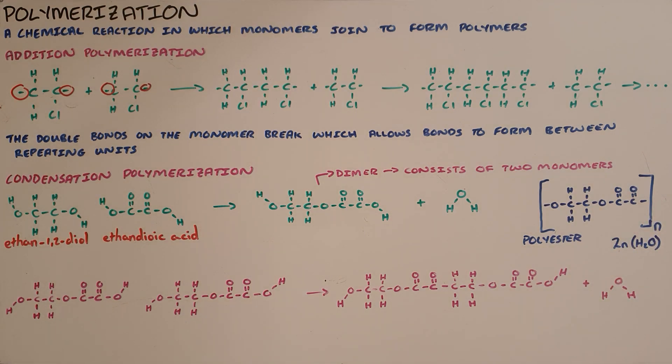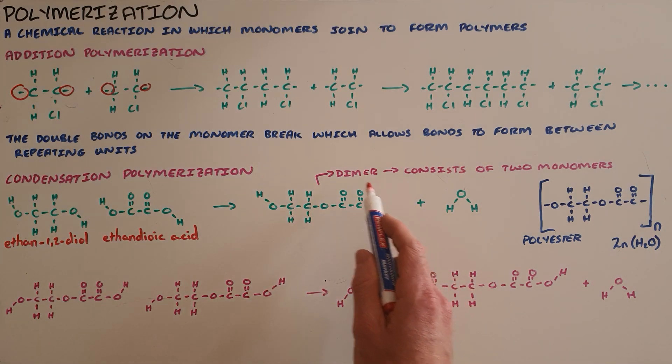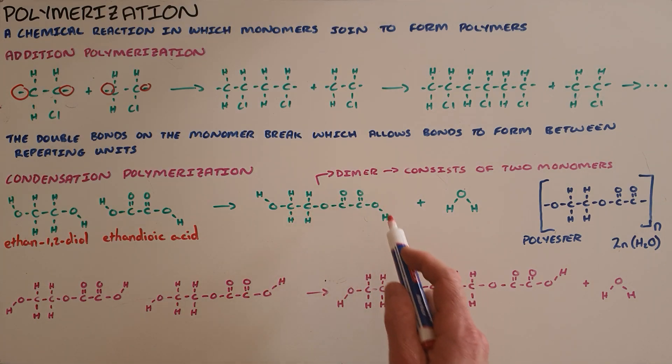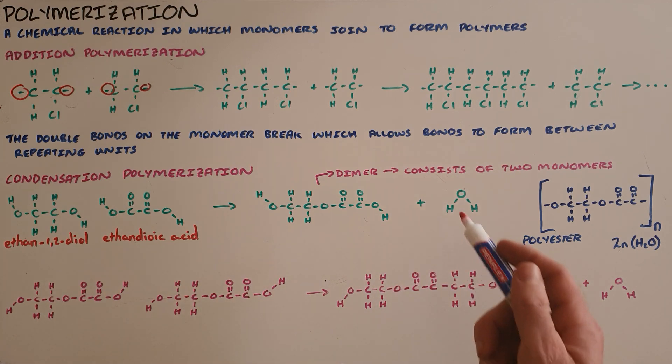The second type of polymerization is condensation polymerization, and this example shows there are two steps to this process. The first step is the alcohol combining with a carboxylic acid in the esterification process—specifically ethane-1,2-diol combining with ethendioic acid. That forms a dimer, which is a molecule consisting of two monomers, and water.